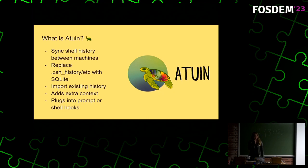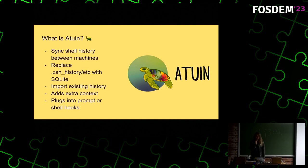More specifically, Atuin was made to synchronize shell history between multiple computers. I had the problem that I would be switching between a whole bunch of laptops, remoting into various different boxes, and trying to find one command that I ran a few days previously on whichever computer it was — that was pretty difficult. So I wanted it all in the same place. The first thing I did was replace the normal ZSH history, bash history, or whatever fish uses, with a SQLite database.